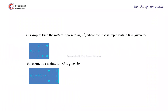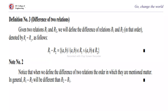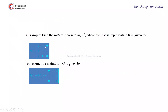Next, how to compute R squared — the power of a relation — using matrix representation. M_R multiplied by M_R gives M of R to the power of 2. You perform the multiplication using the standard matrix product, and you will get the resulting matrix which is M of R squared.